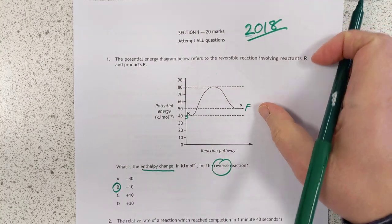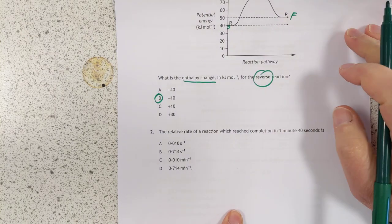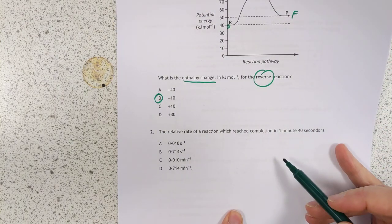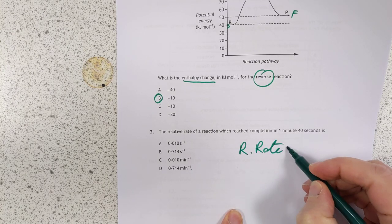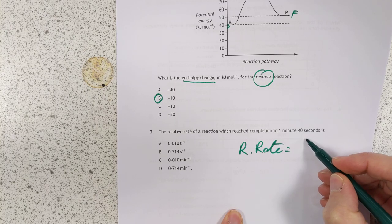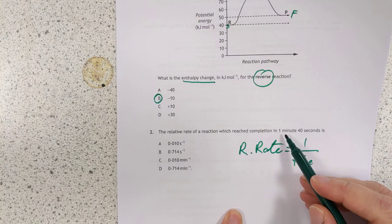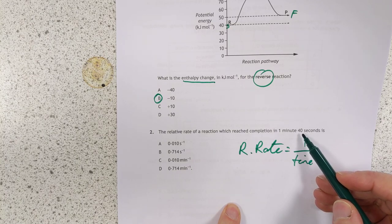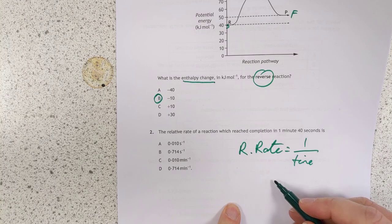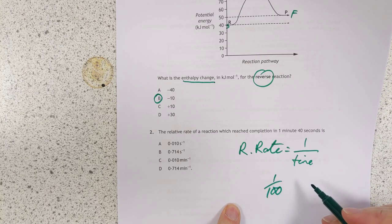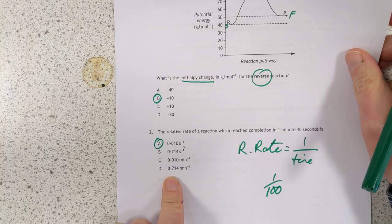The relative rate of a reaction which reached completion in 1 minute 40 seconds. Relative rate has nothing on the top line. There's simply 1 on the top line over time. 1 minute 40 seconds. I would probably turn that into seconds, which becomes 1 over 100, 60 plus 40, which is A. Complete with the correct unit, seconds to the minus 1.